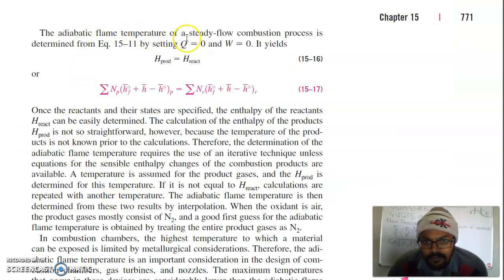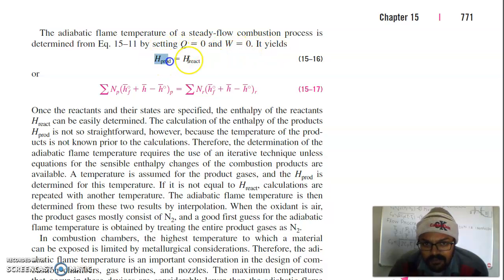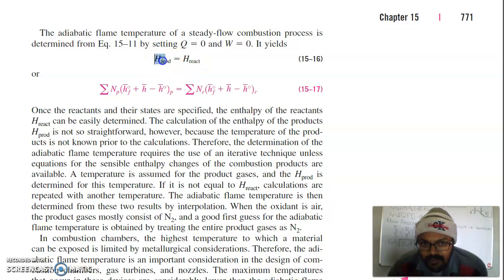The adiabatic flame temperature for a steady flow combustion process is determined by setting Q = 0 and W = 0, which yields H_products = H_reactants — meaning whatever enthalpy the reactants have must equal the enthalpy of the products, since there is no loss to the environment.